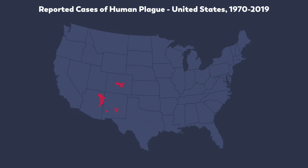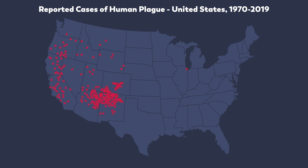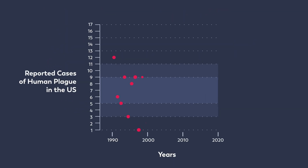This map shows reported cases of plague in the United States by county of residence. Each dot represents a single case and is randomly placed within the county. Note that the dot in Illinois was in a laboratory worker and does not represent natural exposure. Red dots are scattered throughout the Western United States and neighboring states. In recent decades, there have been an average of seven human plague cases reported each year in the United States, with a range of 1 to 17 cases per year.